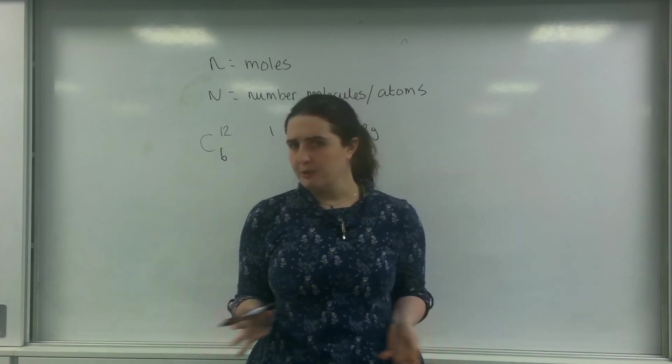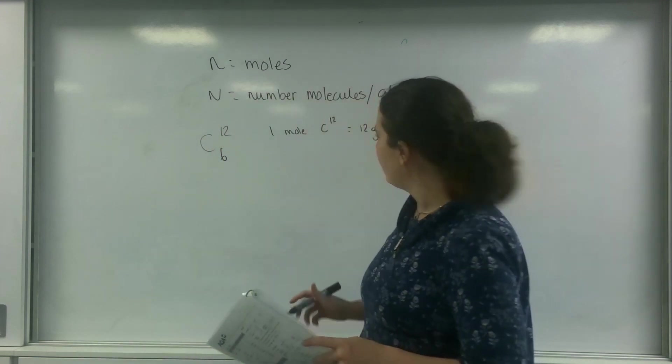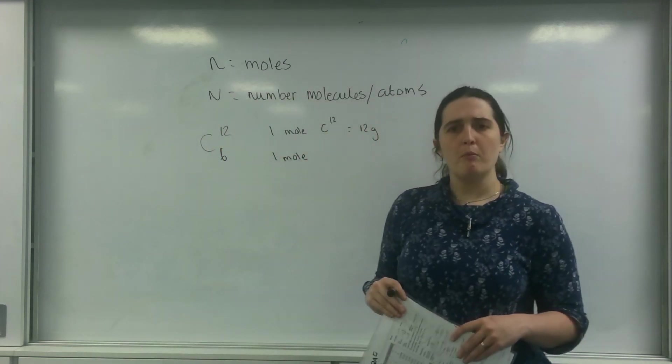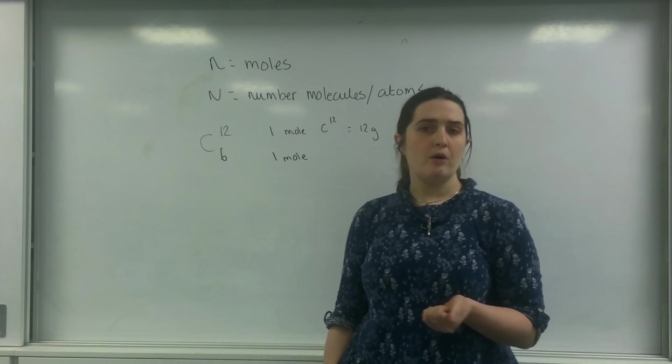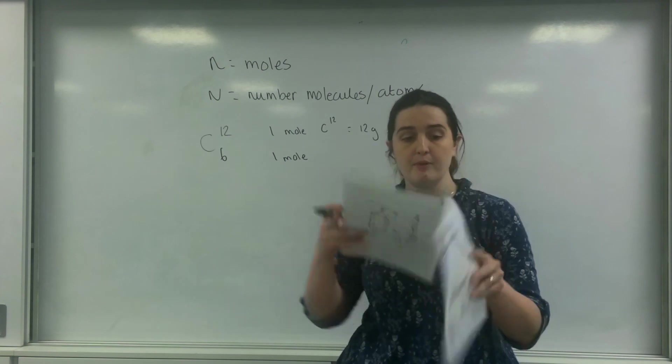They then did some history and worked out the atomic radii and then worked out how many atoms. The guy called Avogadro worked out this. In one mole of anything, so in one mole of carbon 12, in one mole of CO2, there is always this number and this number is on your data sheet.